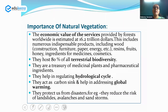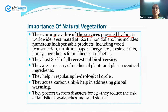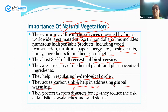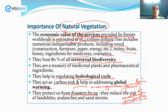The economic value of services provided by forests worldwide is estimated at about $16.2 trillion, which includes different ecosystem services. For example, they provide wood, medicines, cosmetics, and food. Natural vegetation hosts about 80% of all terrestrial biodiversity. Forests help in regulating the hydrological cycle, act as carbon sinks, and help address global warming. They also protect us from disasters — mangrove forests protect coasts, and mountain forests protect from avalanches and landslides.